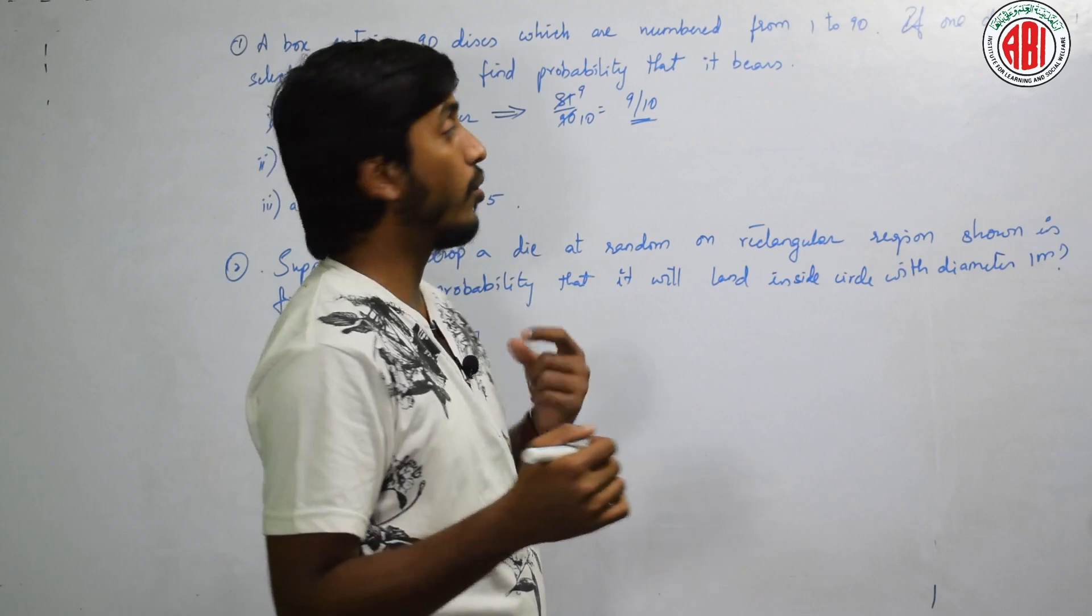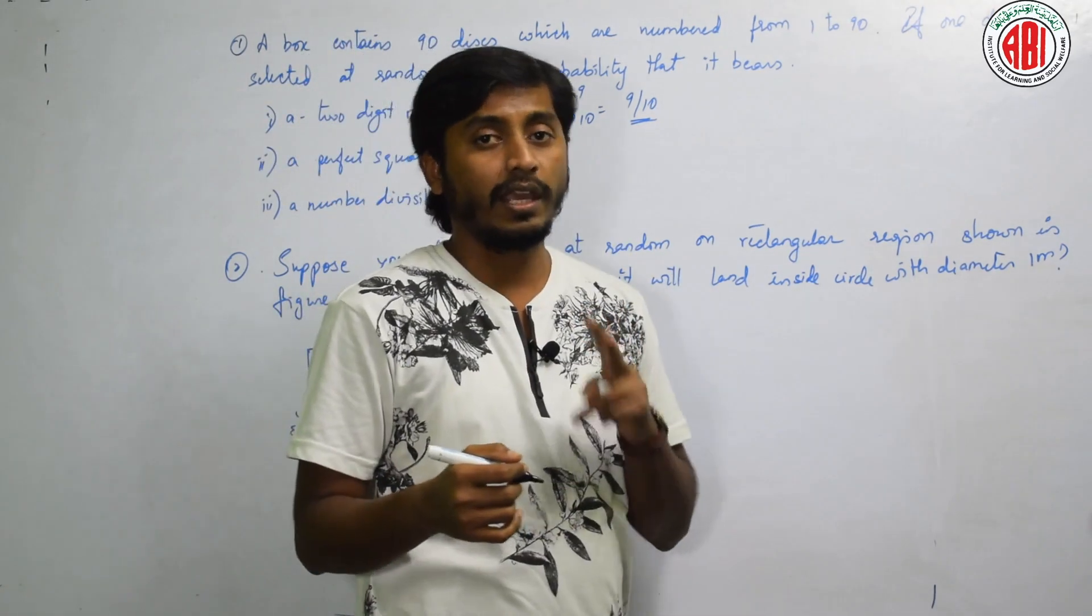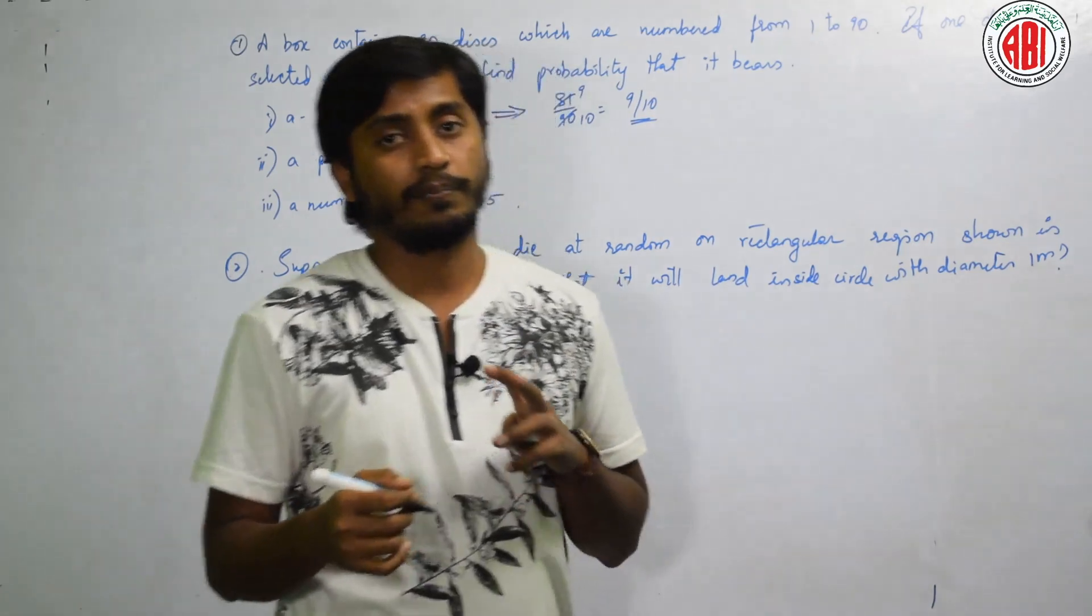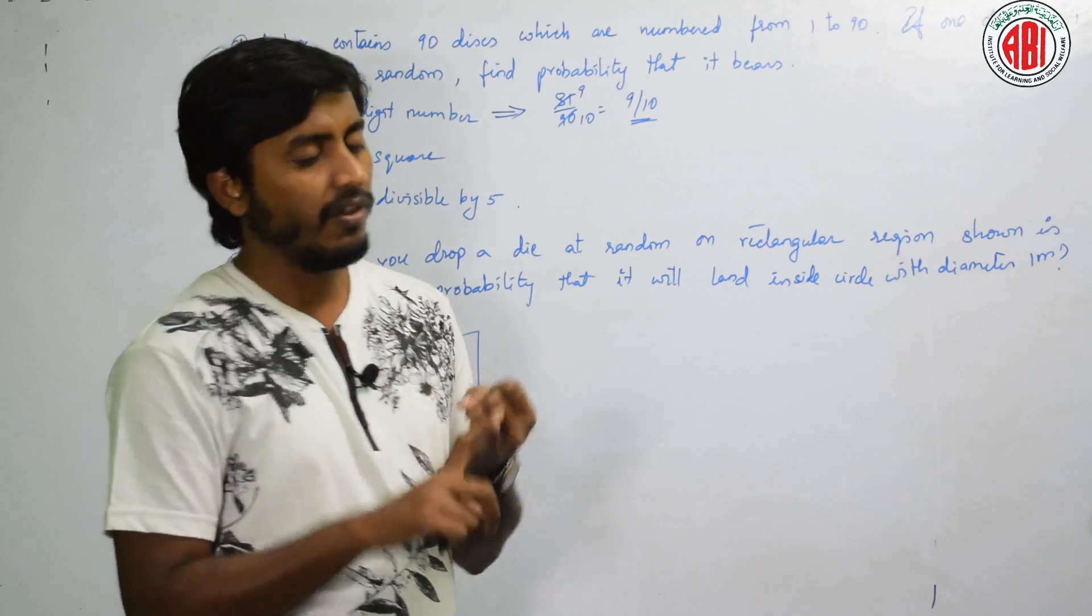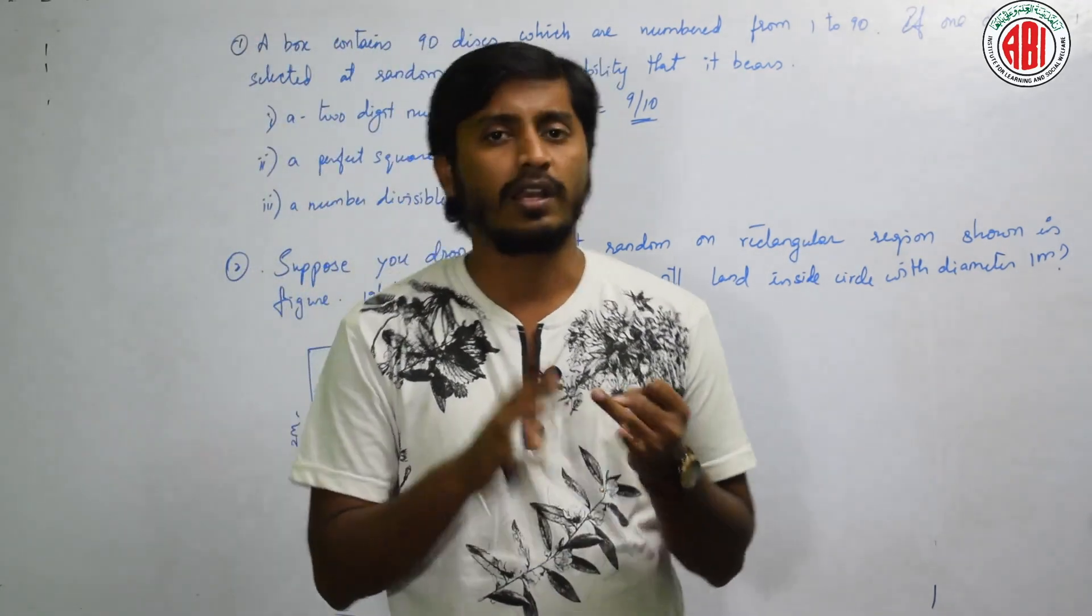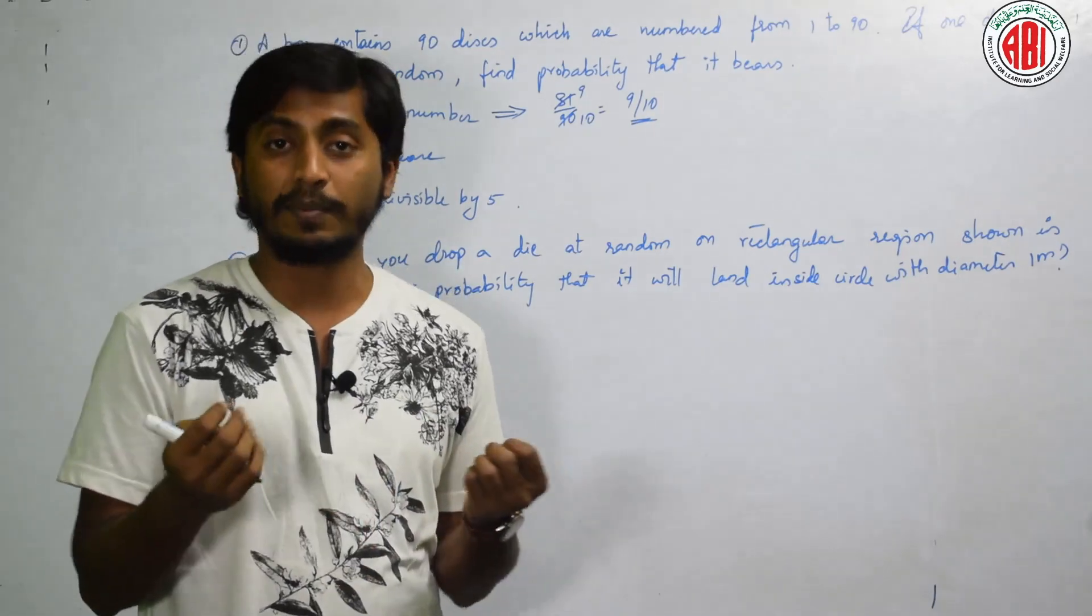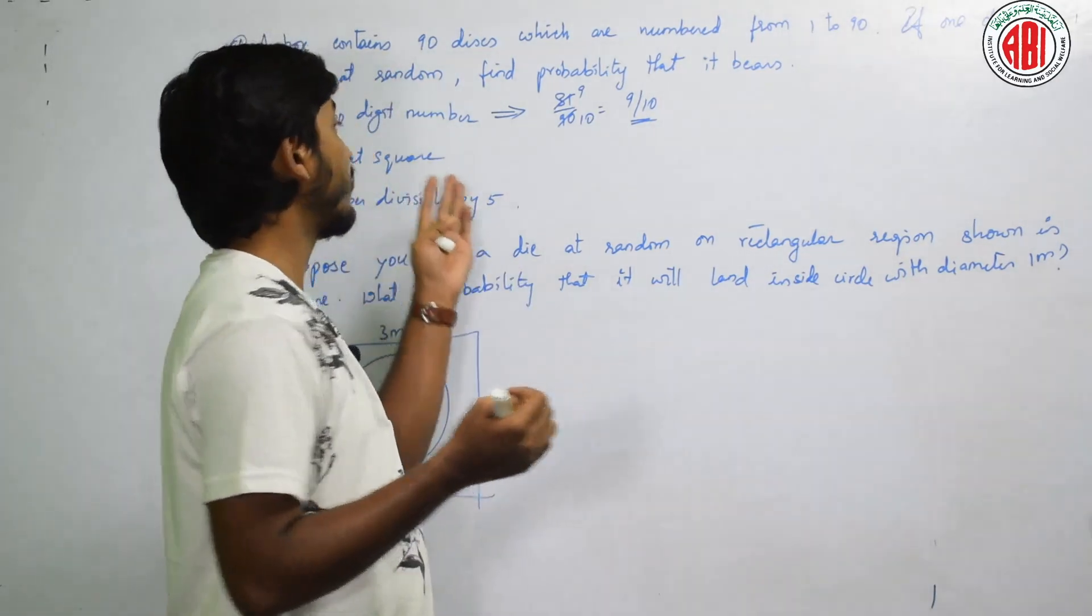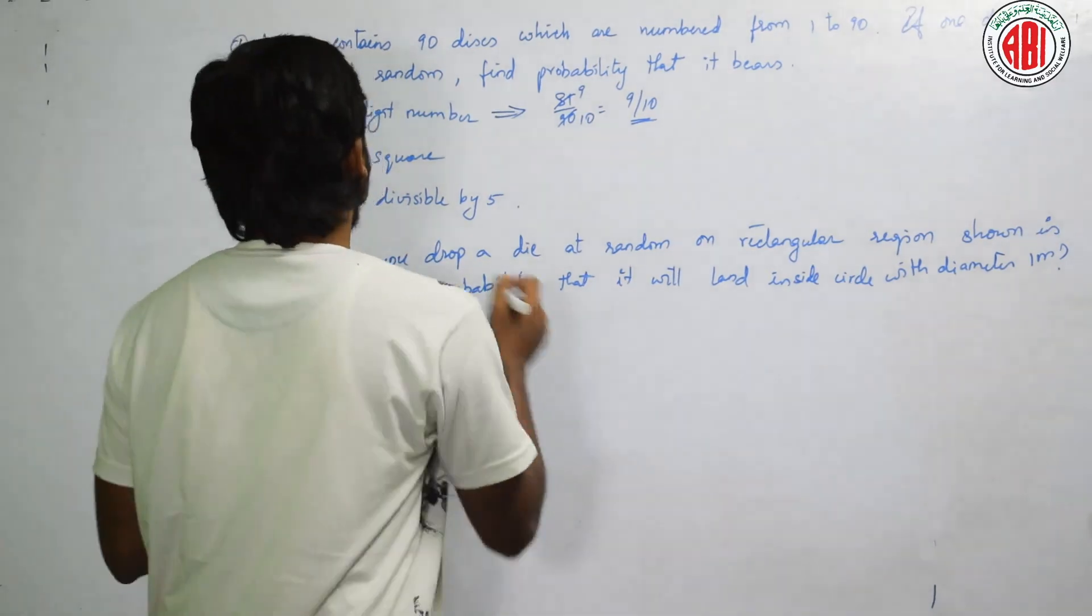What is that we have to know? That is, we need to know what are 2 digit numbers. Next, a perfect square. Perfect square means 1 times 1 is 1. 1 is a perfect square. 2 times 2 is 4. 4 is 9. 3 times 3 is 9. 9 is a perfect square. Like that, we have to get all perfect squares before 90.